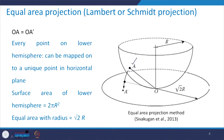Let us look at the concept of equal area projection, also known as Lambert or Schmidt projection. As the name suggests, we equate two areas. Any point on the hemisphere, say point A, can be mapped uniquely onto a horizontal plane as point A prime. We take arc OA and rotate it such that OA equals OA prime, so any point on the sphere can be mapped onto the horizontal plane in a unique manner.